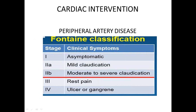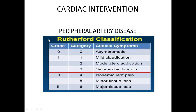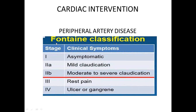We also have the Fontaine classification, which uses stages 1 through 4. Stage 1 is asymptomatic. Stage 2A is mild claudication. Stage 2B is moderate to severe claudication. Stage 3 is rest pain. Stage 4 is ulcer or gangrene due to no blood supply — tissues always need arterial blood flow, and if the artery cannot supply nutrients, the tissue dies, leading to ulcers and gangrene. The greater the stage, the more severe the disease. Both the Rutherford and Fontaine classifications are used in clinical practice.